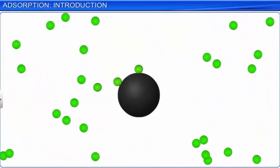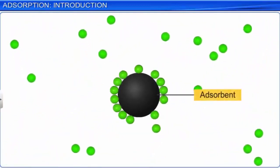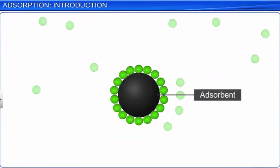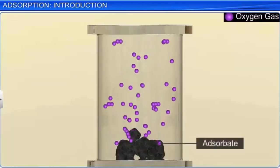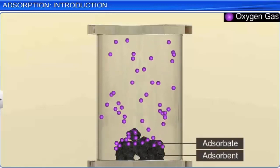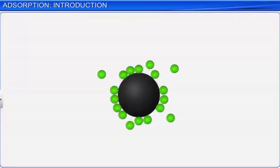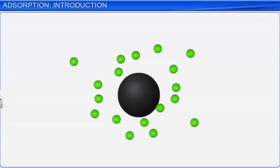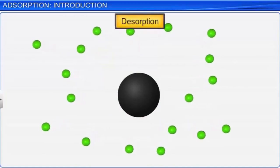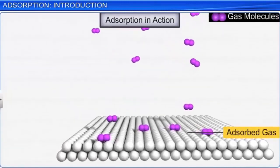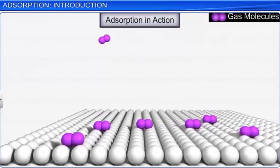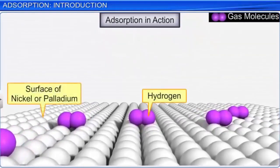The substance on the surface of which adsorption takes place is called the adsorbent, while the substance thus adsorbed is called the adsorbate. In the example we just saw, the molecules of oxygen are the adsorbate, while the solid charcoal is the adsorbent. The reverse process, i.e., the removal of the adsorbed substance from the surface, is called desorption. It can be brought about by heating or by reducing the pressure. The adsorption of a gas on the surface of a metal is called occlusion; for example, hydrogen is adsorbed on the surface of nickel or palladium.